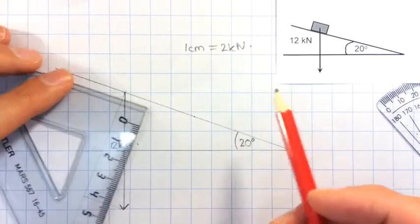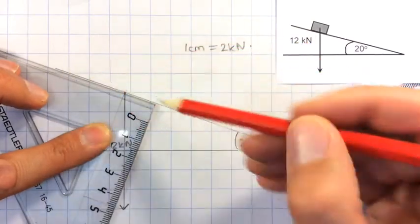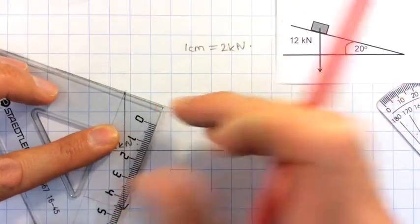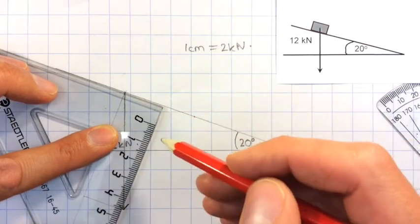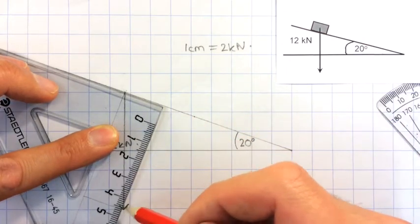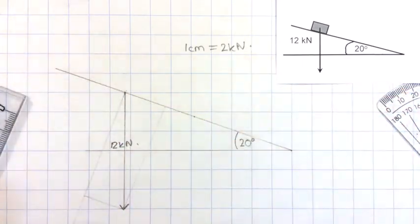And then I can do the same sort of thing here. Make sure that this edge of the set square is perfectly lined up with the slope, and then slide it along until it lines up perfectly with the end of my 12 kN arrow. And draw in like that.